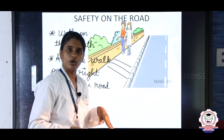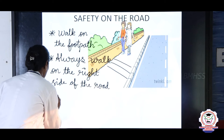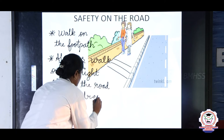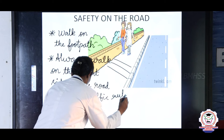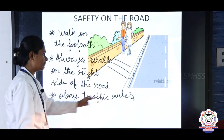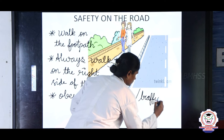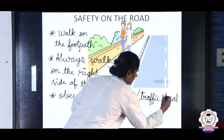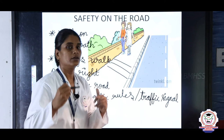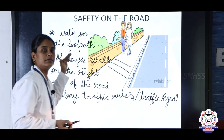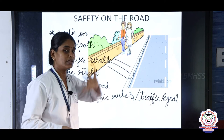The next rule is to always obey the traffic rules and follow the traffic signal. The traffic signal has three colors: red means stop, green means go, and yellow or orange means wait.